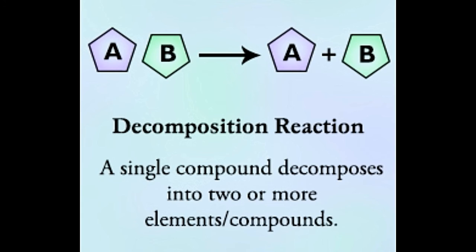Phosphoric acid on decomposition forms phosphorus pentoxide and water. 2H3PO4 yields P2O5 plus 3H2O.